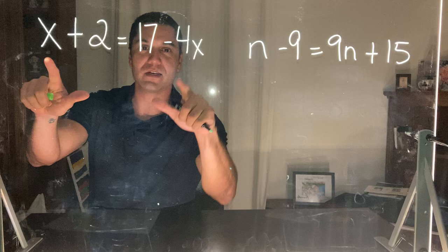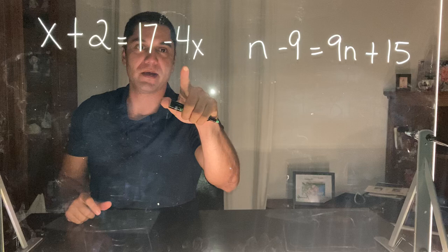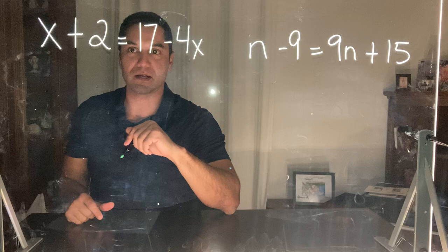In order to solve for x, what we want to do is look at the side of the equation that has a lower x value. This side just has the positive x and this side has the minus 4x. So the minus 4x is a lower value of x terms, so this is the side I want to cancel out.